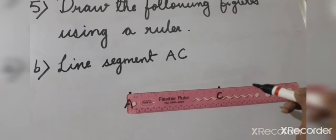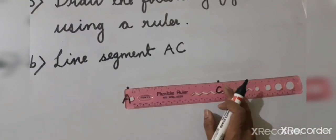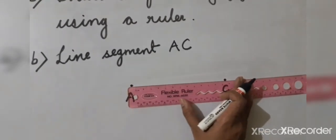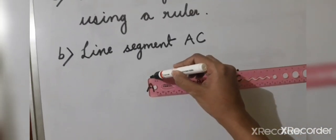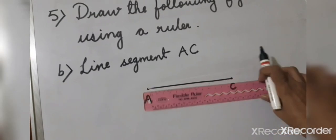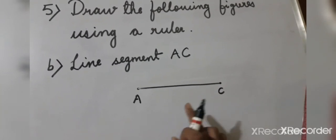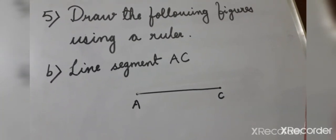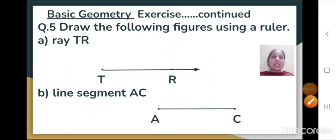We will align our ruler very carefully so that both points are aligned in one plane only. Then with the help of ruler and pencil, we will join them. In this way, you will draw line segment AC. This is the answer for question number 5, where we have to draw ray TR and line segment AC.